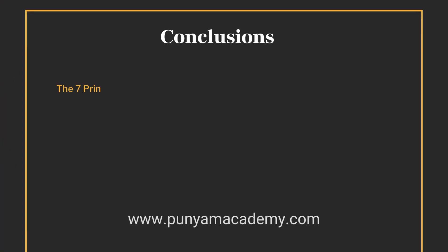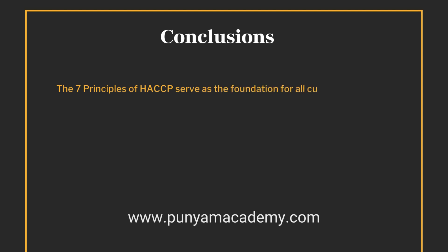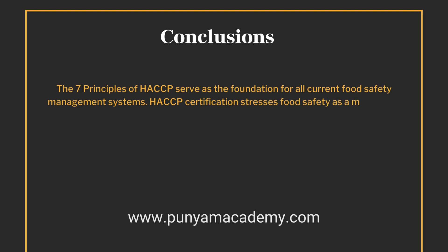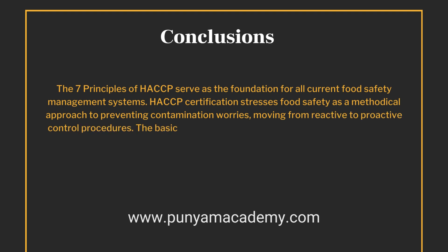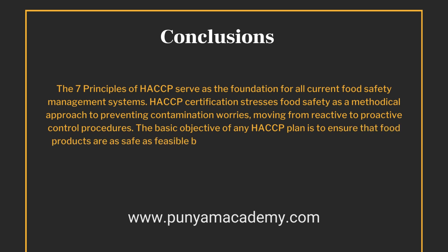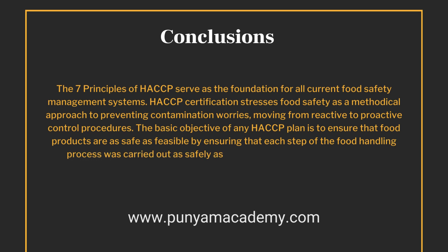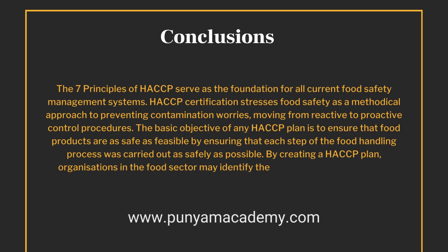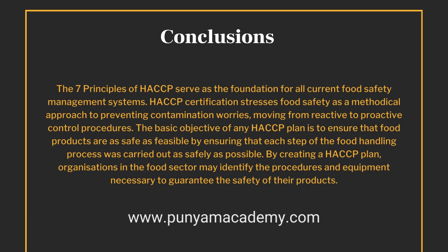The seven principles of HACCP serve as the foundation for all current food safety management systems. HACCP certification stresses food safety as a methodical approach to preventing contamination worries, moving from reactive to proactive control procedures. The basic objective of any HACCP plan is to ensure that food products are as safe as feasible by ensuring that each step of the food handling process was carried out as safely as possible. By creating a HACCP plan, organizations in the food sector may identify the procedures and equipment necessary to guarantee the safety of their products.